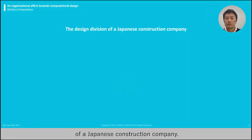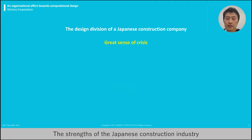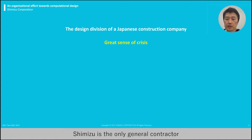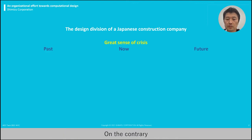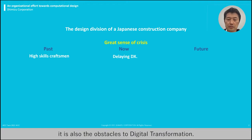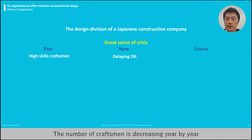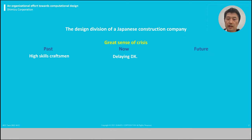We are the design division of a Japanese construction company, and now we have a great sense of crisis. The strength of the Japanese construction industry is the high level of craftsmanship and built trust. Shimizu is the only general contractor that has a wood factory in Japan. Until now, craftsmen often solved design problems — there was not much trouble even if we didn't use digital data. On the contrary, it is also an obstacle to digital transformation. This situation will not last for a long time; the number of craftsmen is decreasing year by year, and it is a big sense of crisis.